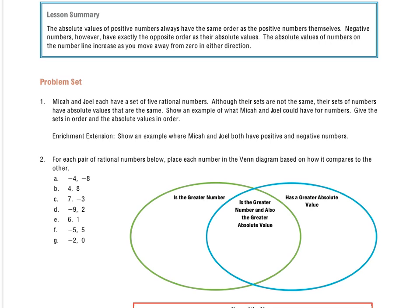At the top we see a lesson summary, and that's a really good one that I'll read first because it's going to come into play a lot here. The absolute values of positive numbers always have the same order as the positive numbers themselves. Negative numbers, however, have exactly the opposite order as their absolute values. The absolute values of numbers on a number line increase as you move away from 0 in either direction.